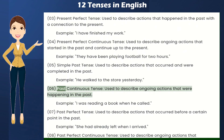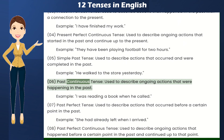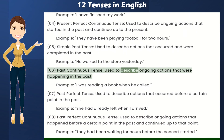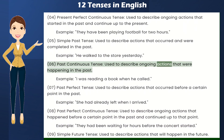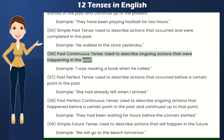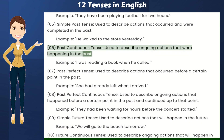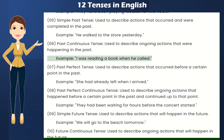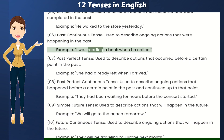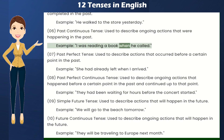Past Continuous Tense — used to describe ongoing actions that were happening in the past. Example: I was reading a book when he called.